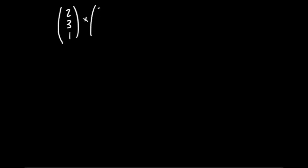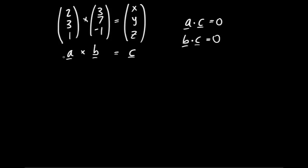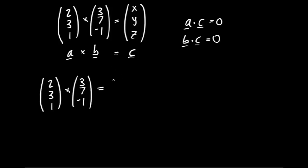Here's how to check your cross product is correct. For A = (2, 3, 1) and B = (3, 7, -1), we get C = (-10, 5, 5). The key property is that C must be perpendicular to both input vectors, so A · C = 0 and B · C = 0. There's a lot of mental arithmetic involved, so this dot product check is very useful for catching slips.